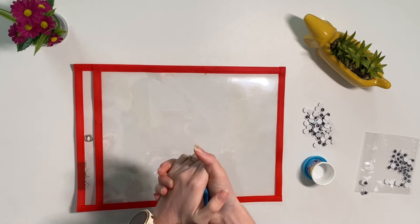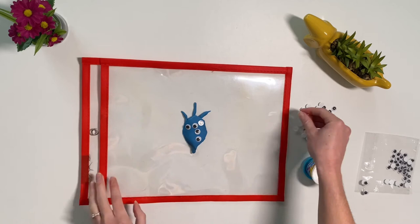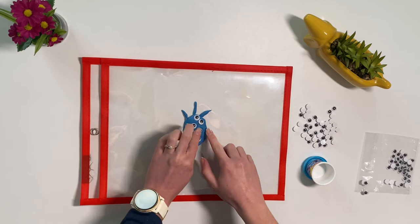On planet seven, all of the aliens have seven eyes. Can children create a model of an alien with seven eyes? You could ask children how many eyes the alien would have if they added one more. What about if they took one away?